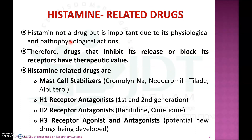Histamine itself is not a drug but a pharmacological or inflammatory mediator. Its importance lies in its physiological and pathophysiological actions. Therefore, drugs that inhibit the release of histamine or block its receptors have more therapeutic value. Mast cell stabilizers like cromolyn sodium and nedocromil stabilize mast cells against degranulation, thereby preventing histamine release. H1 receptor antagonists block the selective H1 receptor, antagonizing all H1-mediated actions of histamine.